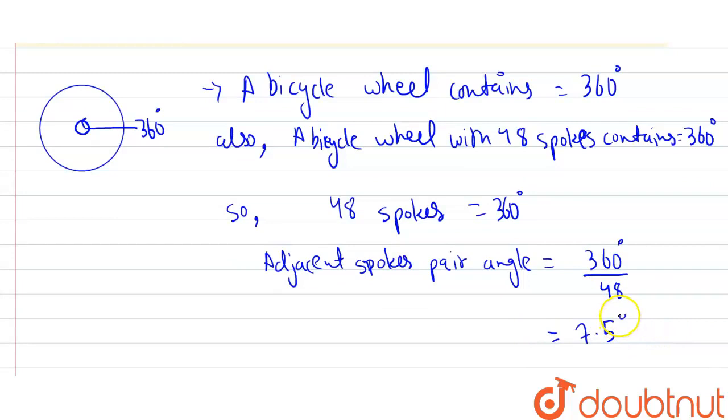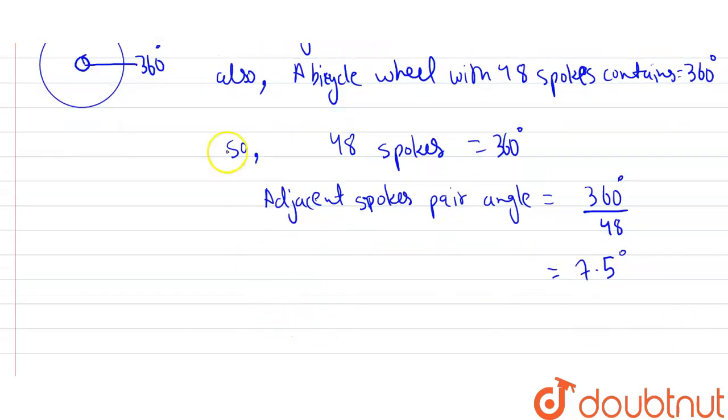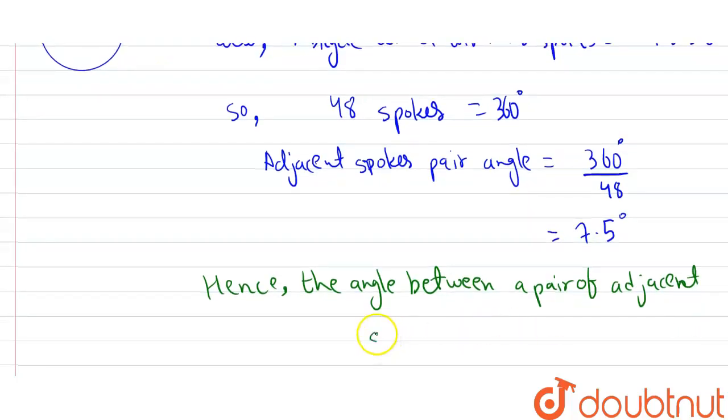Now if we divide 360 by 48, we'll get 7.5 degrees. Hence, the angle between a pair of adjacent spokes equals to 7.5 degrees. Answer.